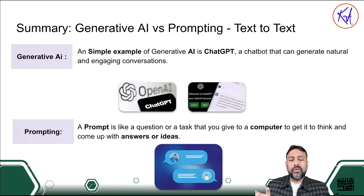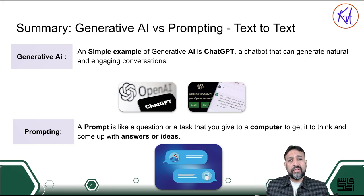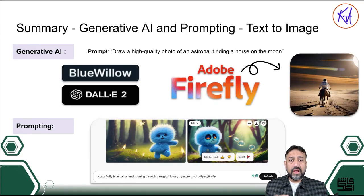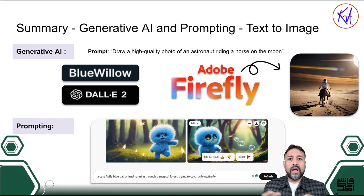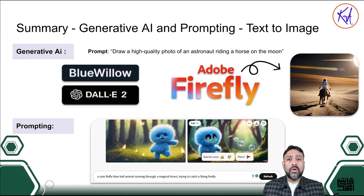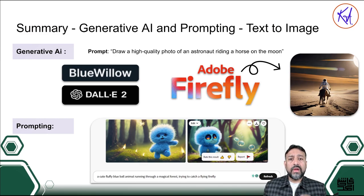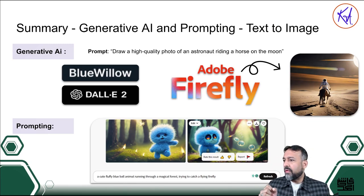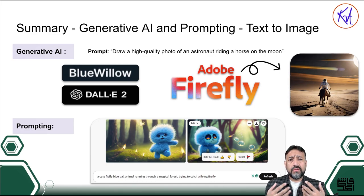Let's see another example of how generative AI works with text-to-image models. We've learned two types: text-to-text like ChatGPT, and text-to-image. Other text-to-image large language models include DALL-E 2, also by OpenAI — when you sign up for OpenAI, click on DALL-E 2 and use some prompts. I used the prompt 'Draw a high quality photo of an astronaut riding a horse on the moon.' Adobe Firefly is another free recommended tool. Use this prompt and see what image it creates — very realistic. Another example prompt was 'A cute fluffy blue ball animal running through a magical forest trying to catch a firefly,' and it created a fluffy animal walking through the forest. That's how generative AI and prompting work.